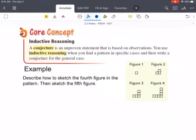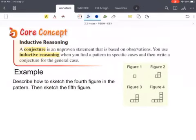So when we're looking at inductive reasoning, a conjecture is an unproven statement that is based on observations. You use inductive reasoning when you find a pattern, so what we've been talking about so far, in specific cases, and then write a conjecture for the general case. So looking at this first one, we're looking at a pattern based on the four figures there. And we see that in each one, the pattern is that you're adding another block on the top and on the side. So for figure five, we'd have five going up and five going to the left, and that's the pattern that we're recognizing.